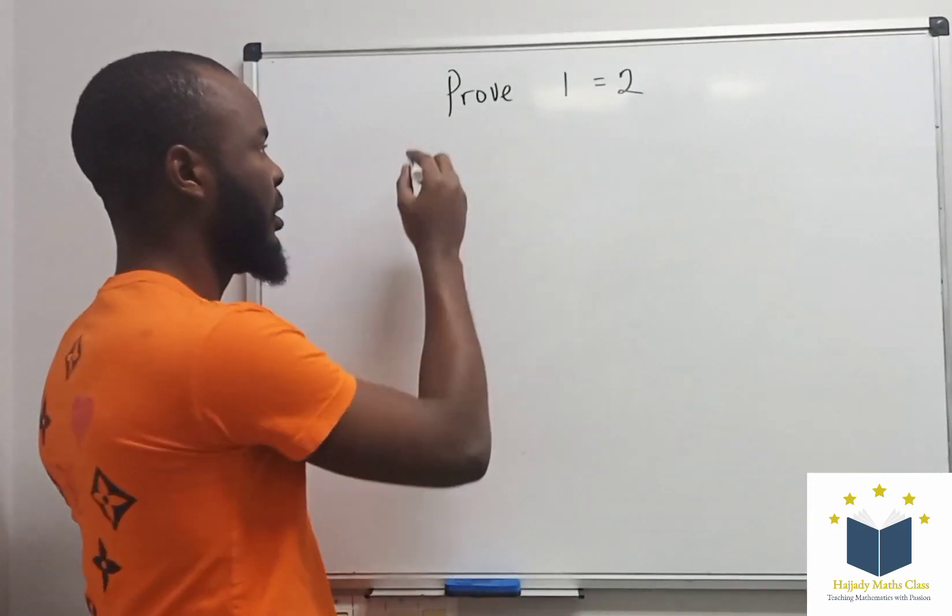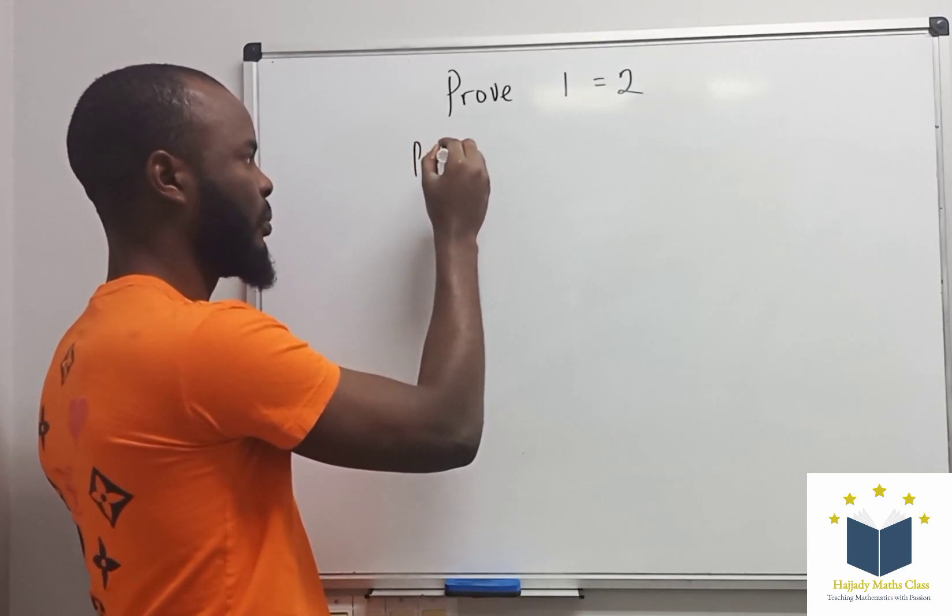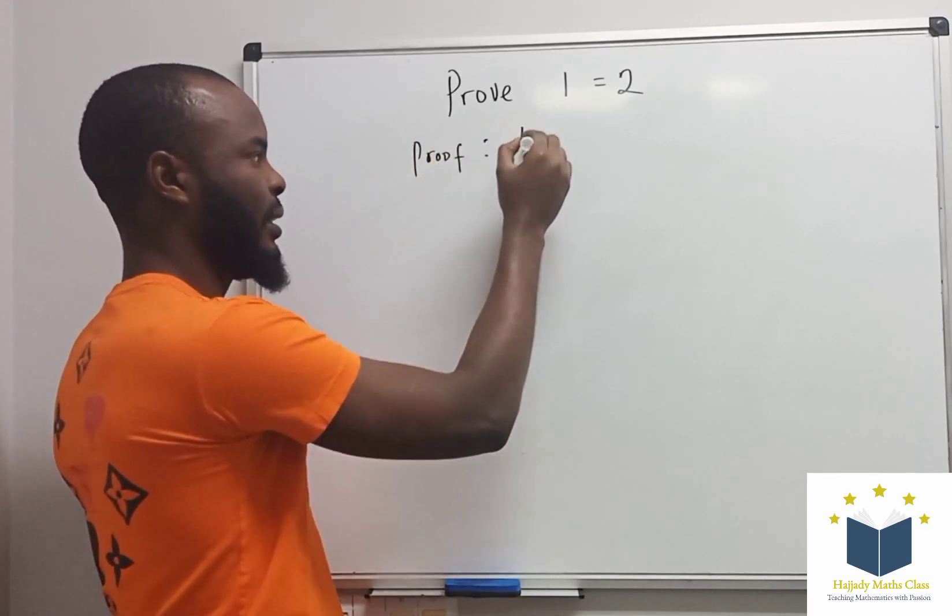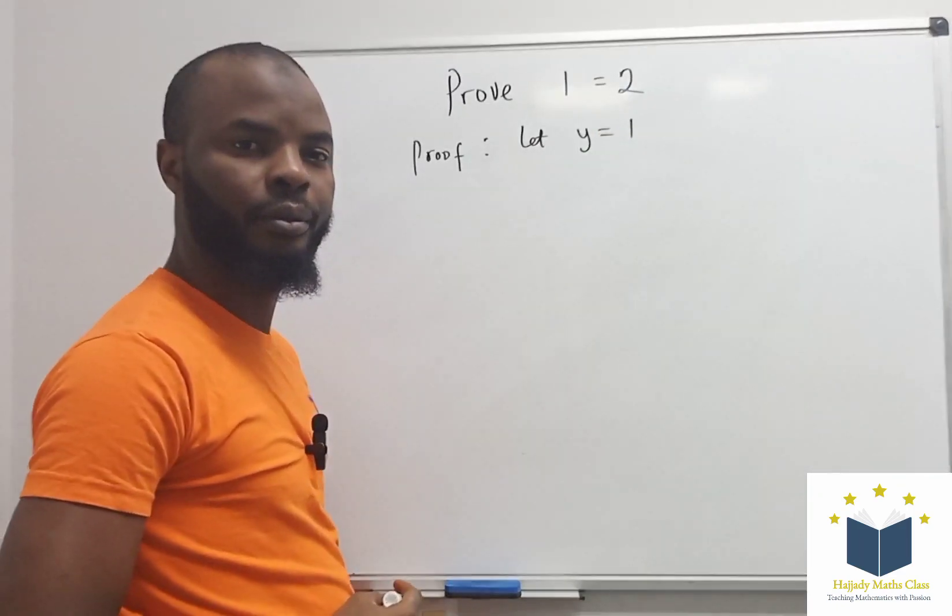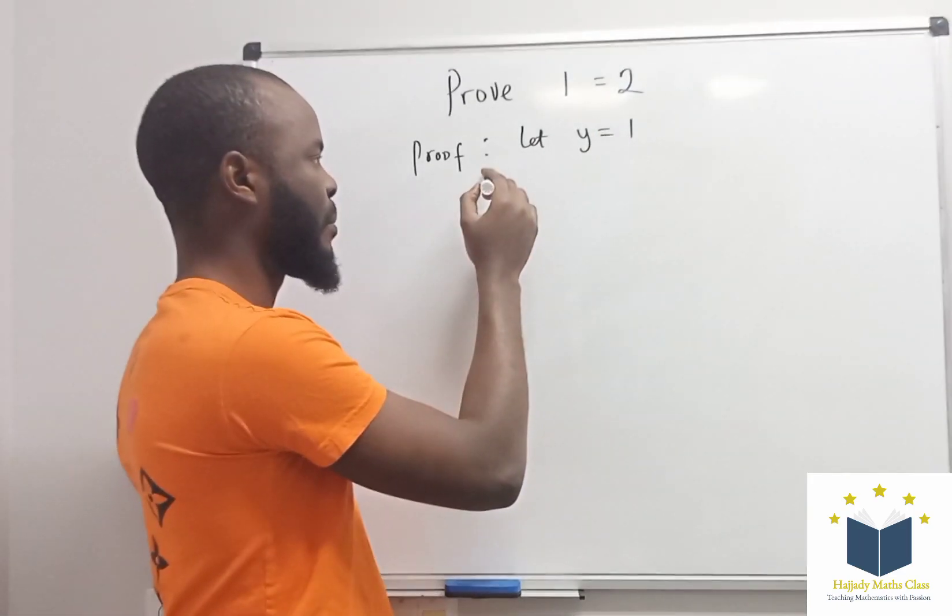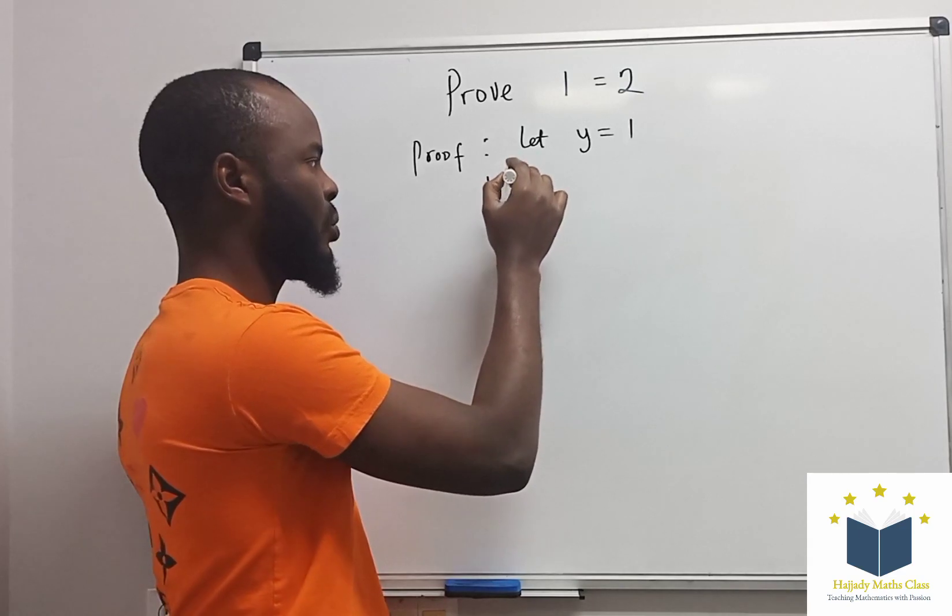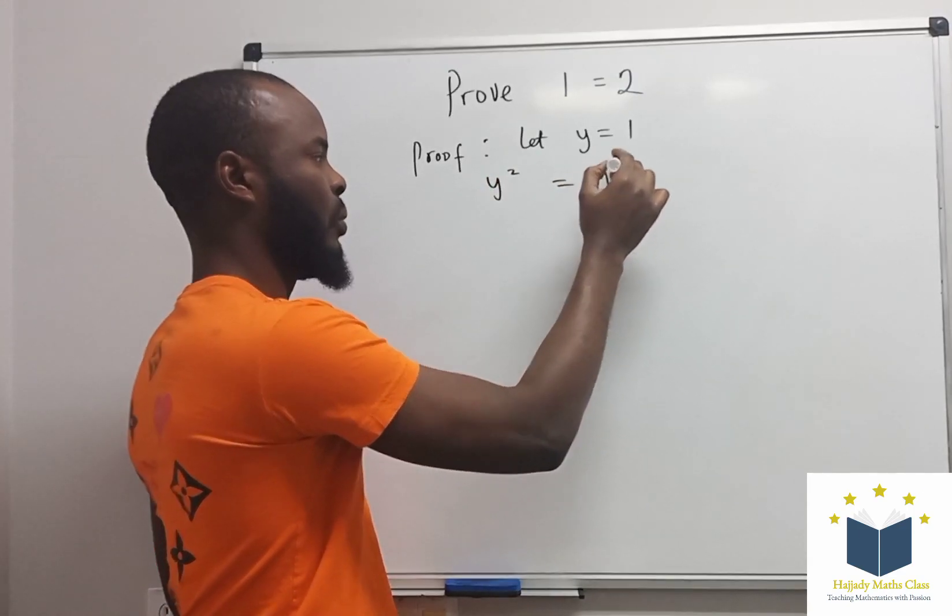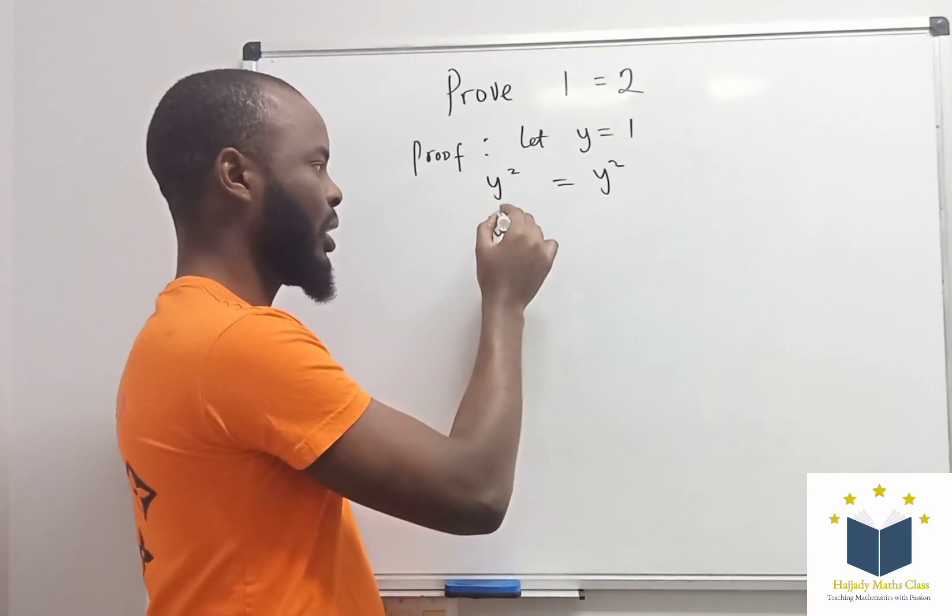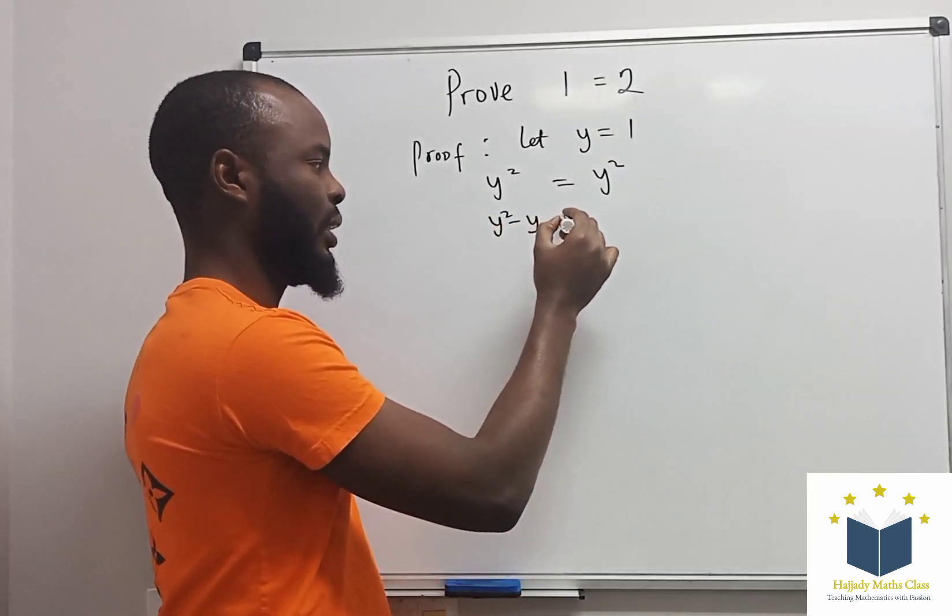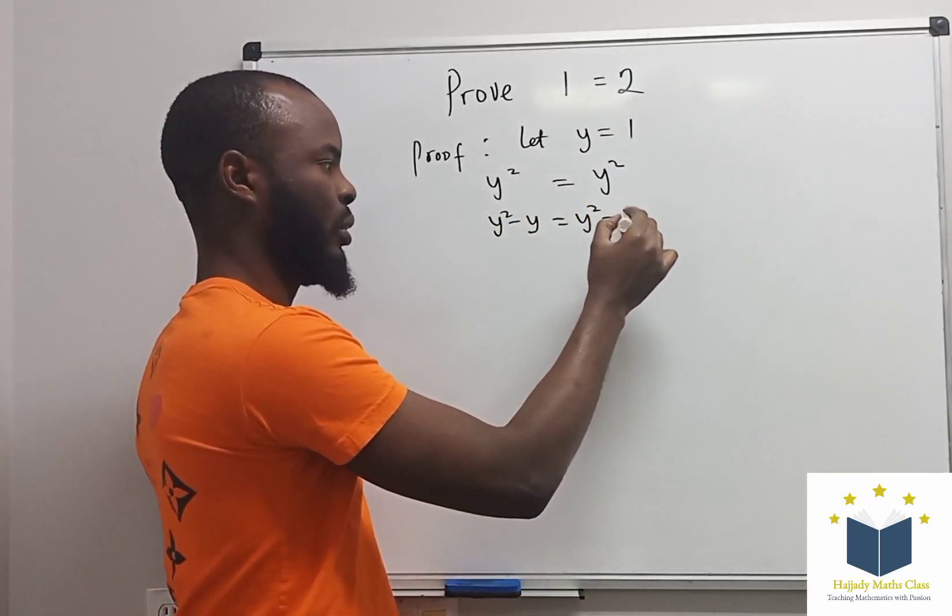So the first thing we do is let y equal 1. Then we have that y² = y². Next, y² - y = y² - 1. They are still going to be equal.